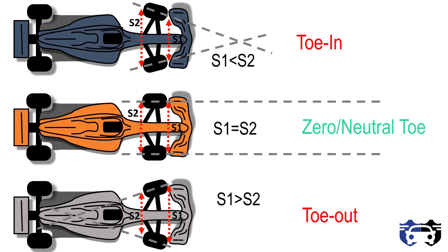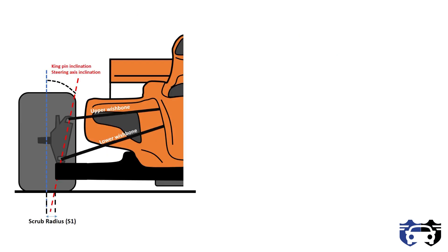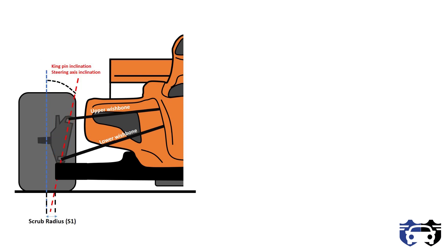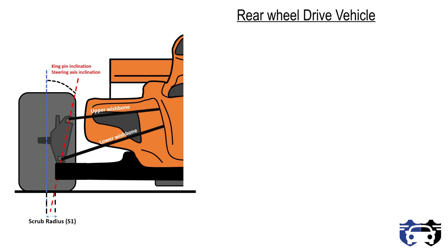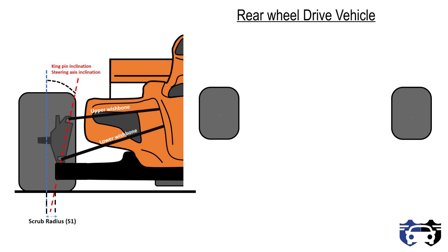Now let's see how toe affects the handling characteristics of a vehicle. The distance at the contact patch between the center line of the tire and the kingpin axis is called scrub radius. Scrub radius can be positive, negative, or zero. In the figure we are considering positive scrub radius. For a rear wheel drive vehicle, the center line of the tire is shown by the blue dot at the contact patch, and the kingpin axis is shown by the red dot — the distance between these two dots is the scrub radius.